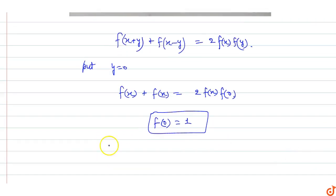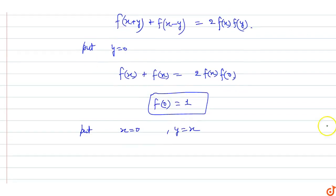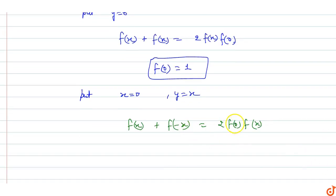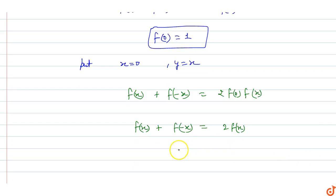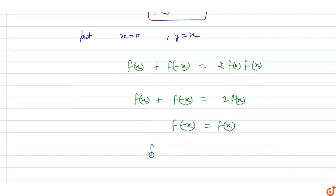Now put x = 0 and y = x. Then f(-x) + f(x) = 2f(0)f(x). Since f(0) = 1, we get f(x) + f(-x) = 2f(x), which means f(-x) = f(x). Therefore, f(x) is an even function.